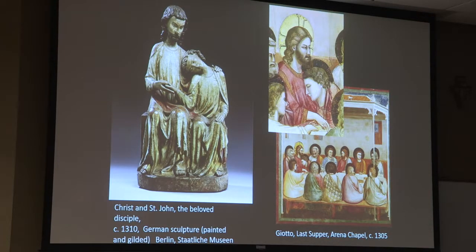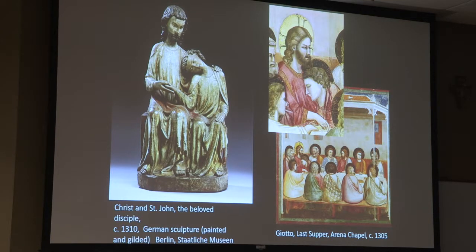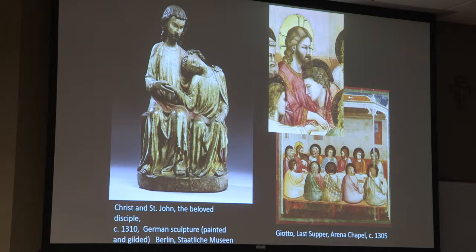By the way, that tendency to show John the beloved disciple as a feminized, youthful, androgynous male figure is behind Dan Brown's crazy notion that it was Mary Magdalene at the Last Supper in Leonardo's Last Supper — totally ridiculous. In fact, that was a figure type used for St. John, meant to connote those qualities as a kind of bridal soul to Christ.